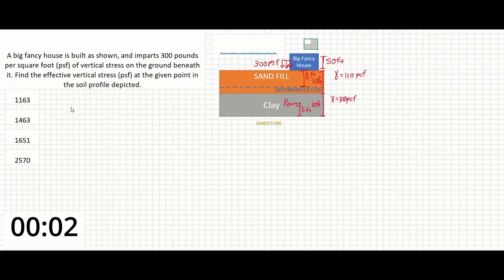In this problem, a big fancy house is built as shown and imparts 300 pounds per square foot of vertical stress onto the ground beneath it. Find the effective vertical stress in pounds per square foot at the given point in the soil profile depicted.